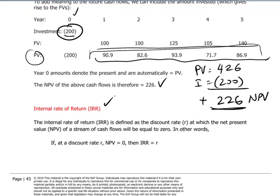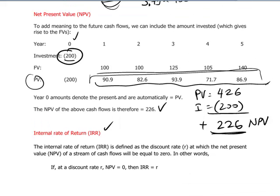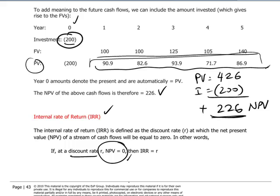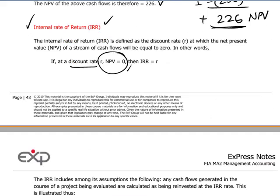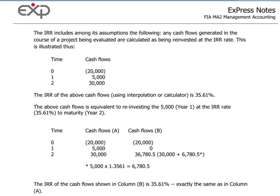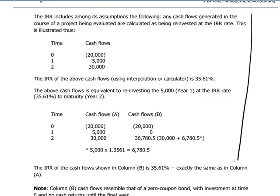The internal rate of return is a special case. It determines the discount rate at which the net present value of a series of cash flows is equal to zero — in other words, where the investment amount is exactly equal to the present value of the future cash flows. This is used for a variety of investment decision-making processes, and this is really more background appreciation of the method.